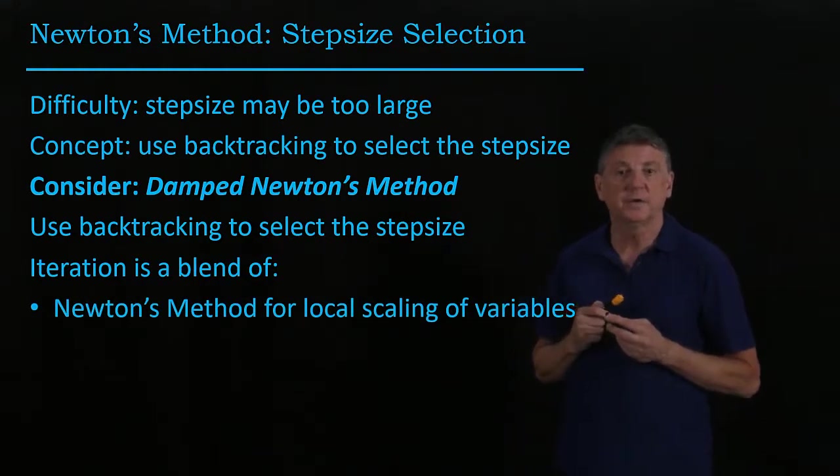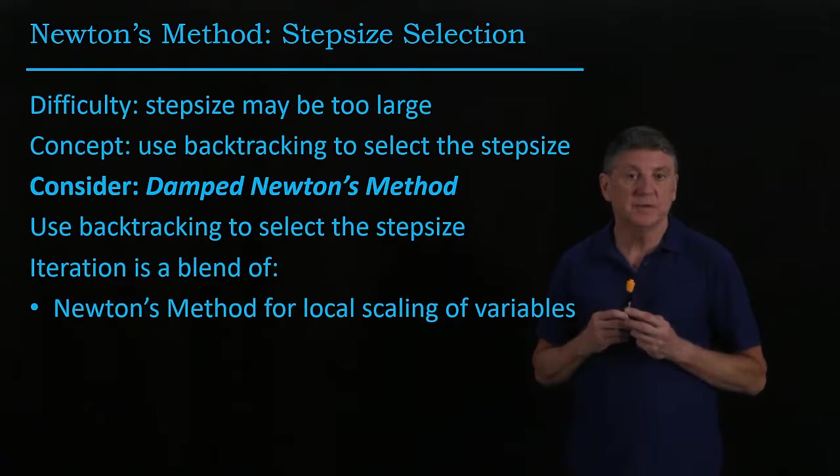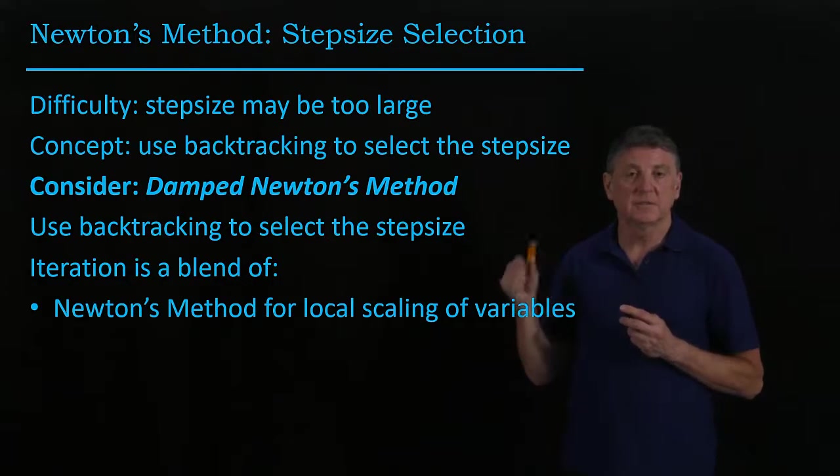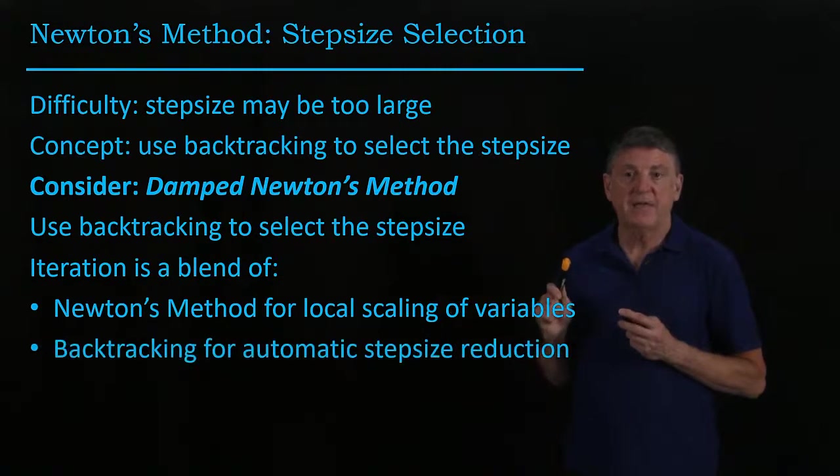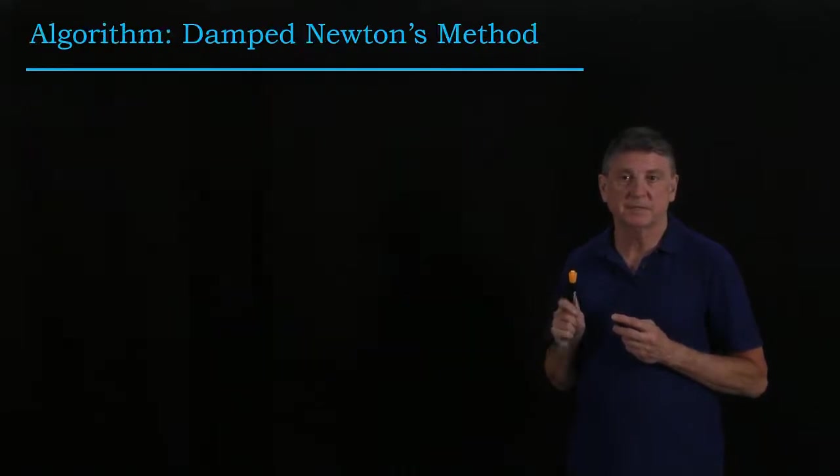So now what we're going to do is we're going to use Newton's method to scale the variables iterate at each iteration. And then we're going to use backtracking to figure out what the step size is.